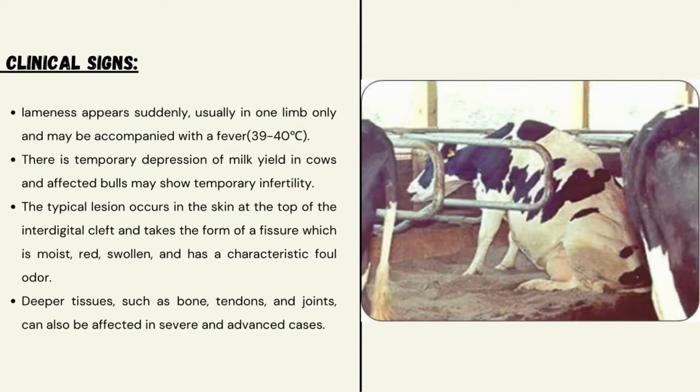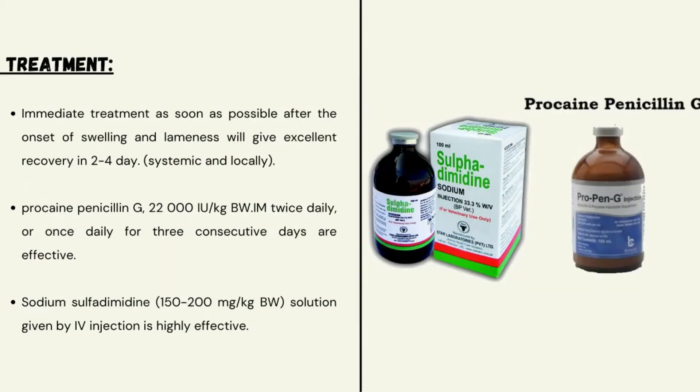There is a temporary depression of milk yield in cows. A typical lesion occurs in the skin, which is moist, red, swollen, and has a characteristic foul odor. Deeper tissues such as bones, tendons, and joints can also be affected in severe and advanced cases.